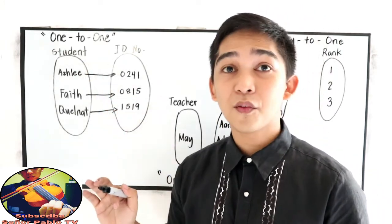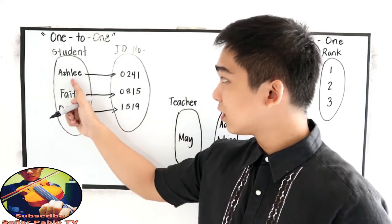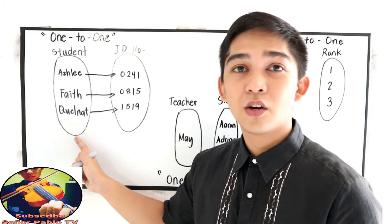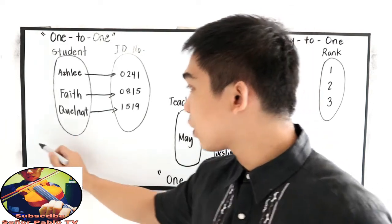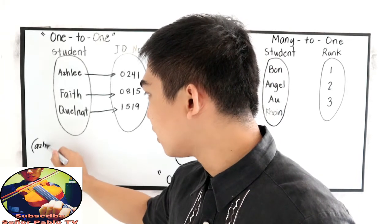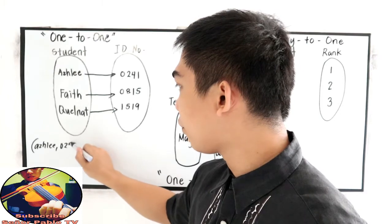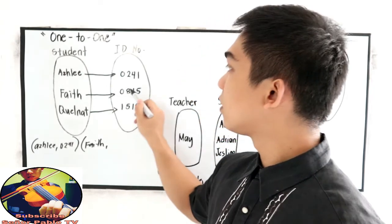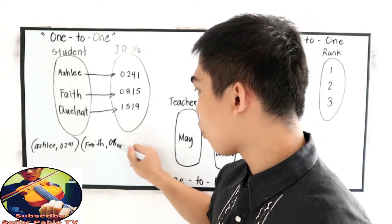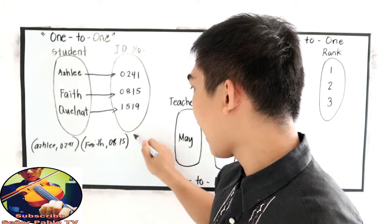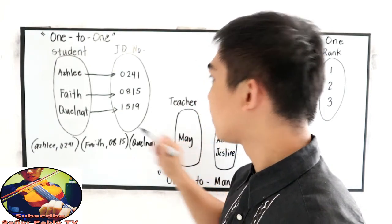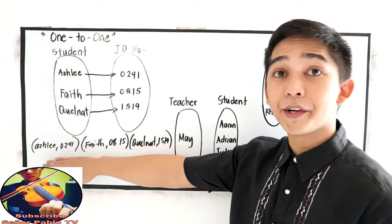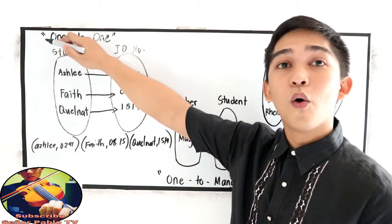We say one-to-one if we have one distinct element for X and a distinct element for Y. So, if we're going to write this in our coordinate or ordered pairs, this will be Ashley 0241. Next, Faith, her ID number is 0815. And Kel-Nath is 1519. This will be our ordered pairs. That is the one-to-one correspondence.